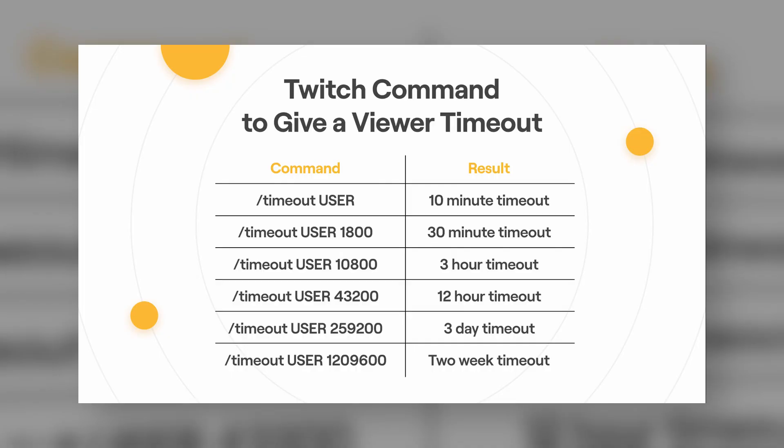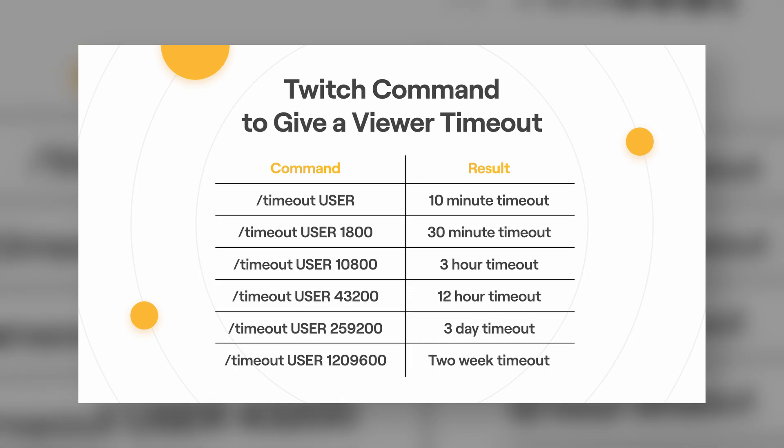You can also set the timeout for a specific period of time measured in seconds. You will need to determine how many seconds are in the period of time you want the ban to last. To time someone out with a specific period of time, type the timeout command where 'seconds' is replaced with the number of seconds.